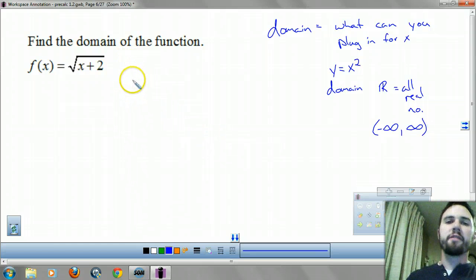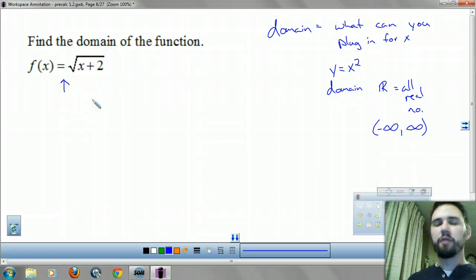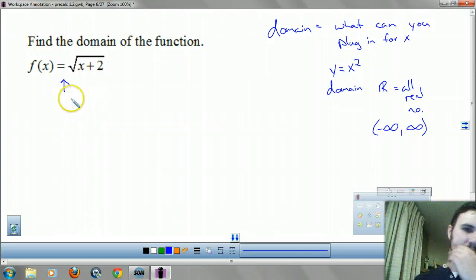The only two you're going to come across that are going to be different are square roots and if there's a denominator. If you see a square root, what you have to think about is what can't you take the square root of? I can take the square root of 16, that's 4. I can take the square root of 20 and take the square root of 0, but I cannot take the square root of a negative number. We're dealing with real stuff here. Forget about that imaginary stuff for a second. Did you forget about it? Good. What I want you to think about is we can't take the square root of a negative number, right?